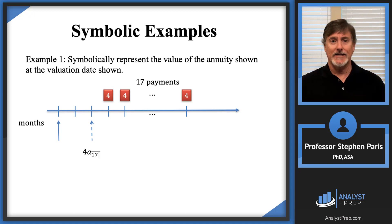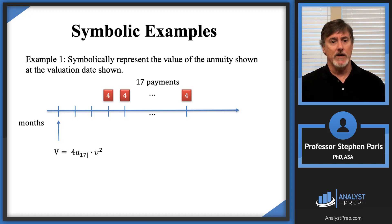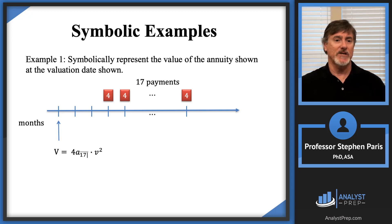Then I need to take that value and discount it two periods to get back to the valuation date, and I would do that by multiplying by V-squared. So I could symbolically represent the value of this annuity as four times A-angle-17 times V-squared.